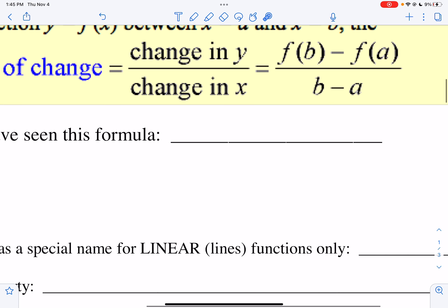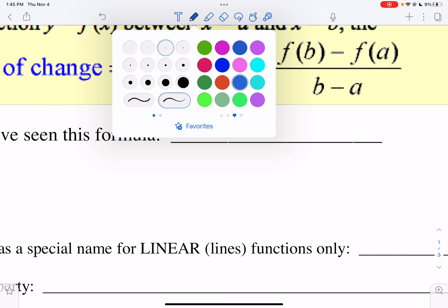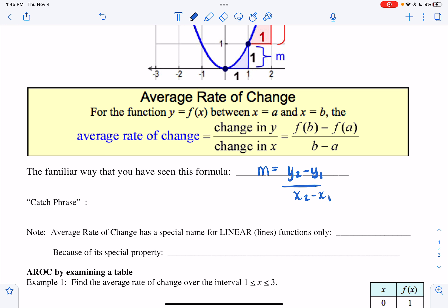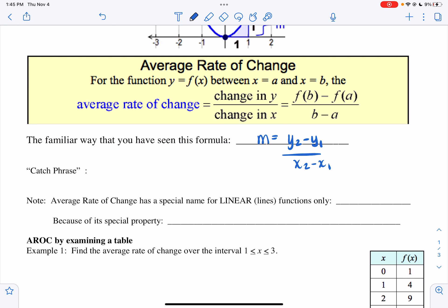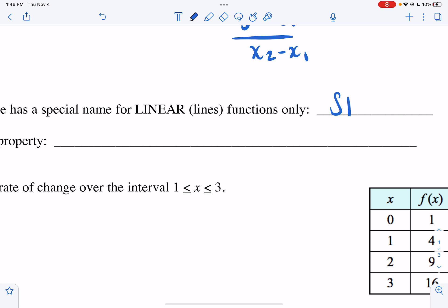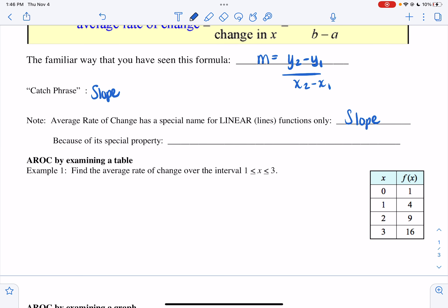A familiar way you've seen this formula was way back in middle school when you saw it like this: slope is equal to y2 minus y1 over x2 minus x1. And the catchphrase is simply just slope. Note, average rate of change has a special name for linear functions only, and that is slope, because slope for linear functions is always constant.